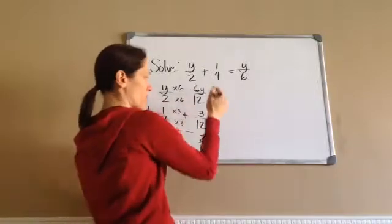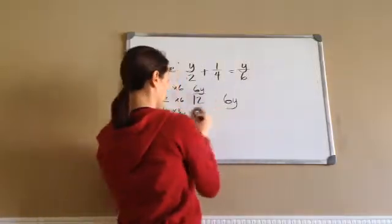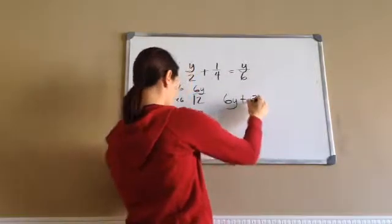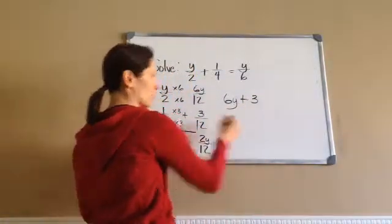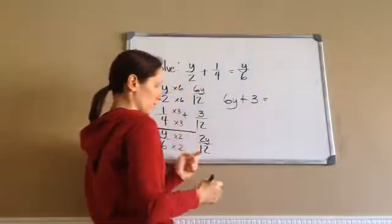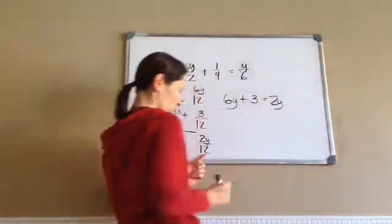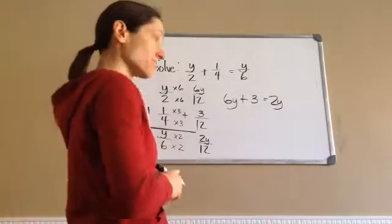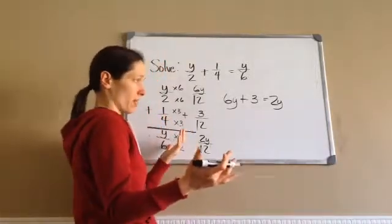So 6Y plus, what's the numerator on this one? 3, and then this line means equal, equals, and then 2Y. So we just got rid of the 12. This is the way you do these kind of problems. Now, you work it like any other problem.